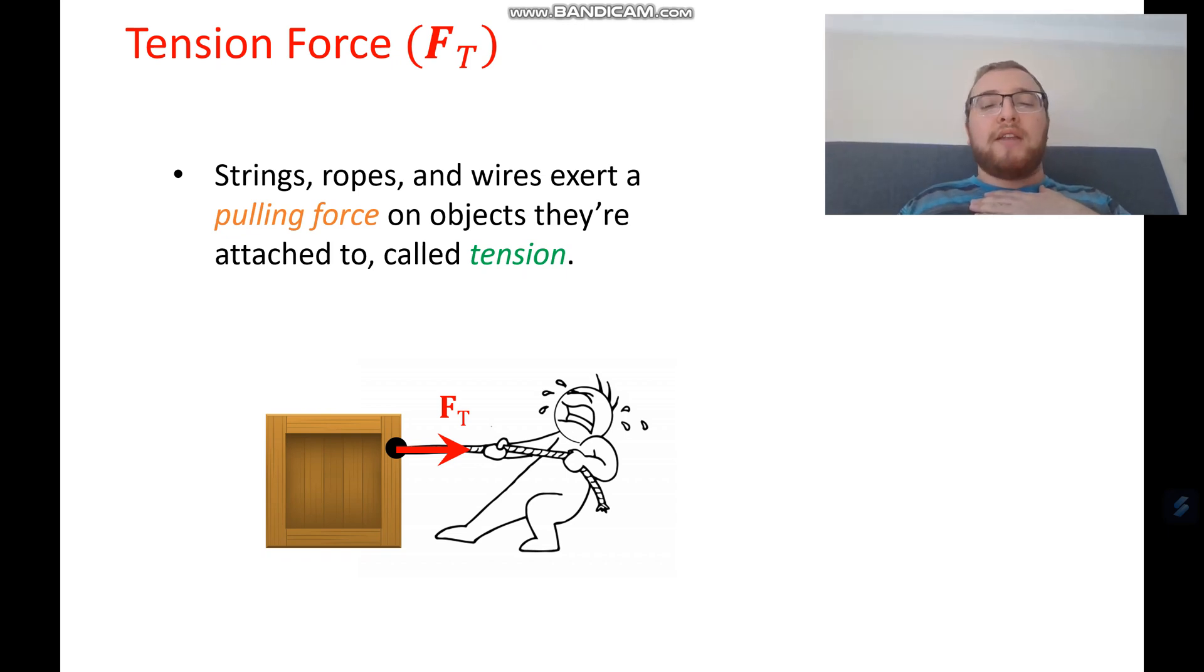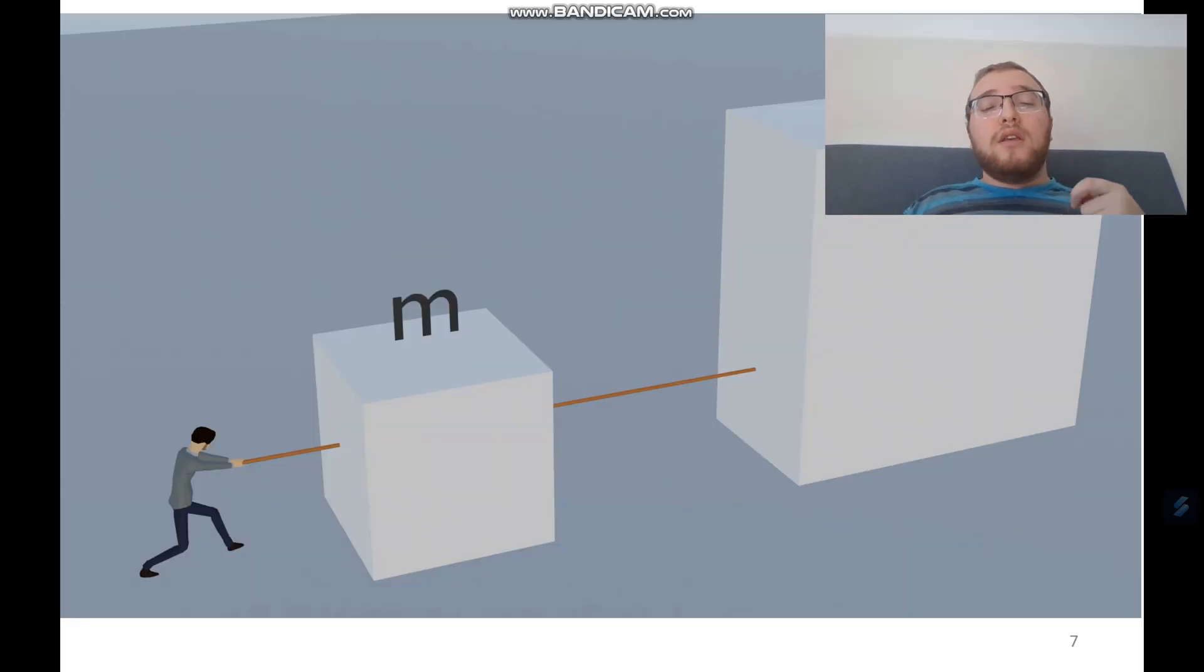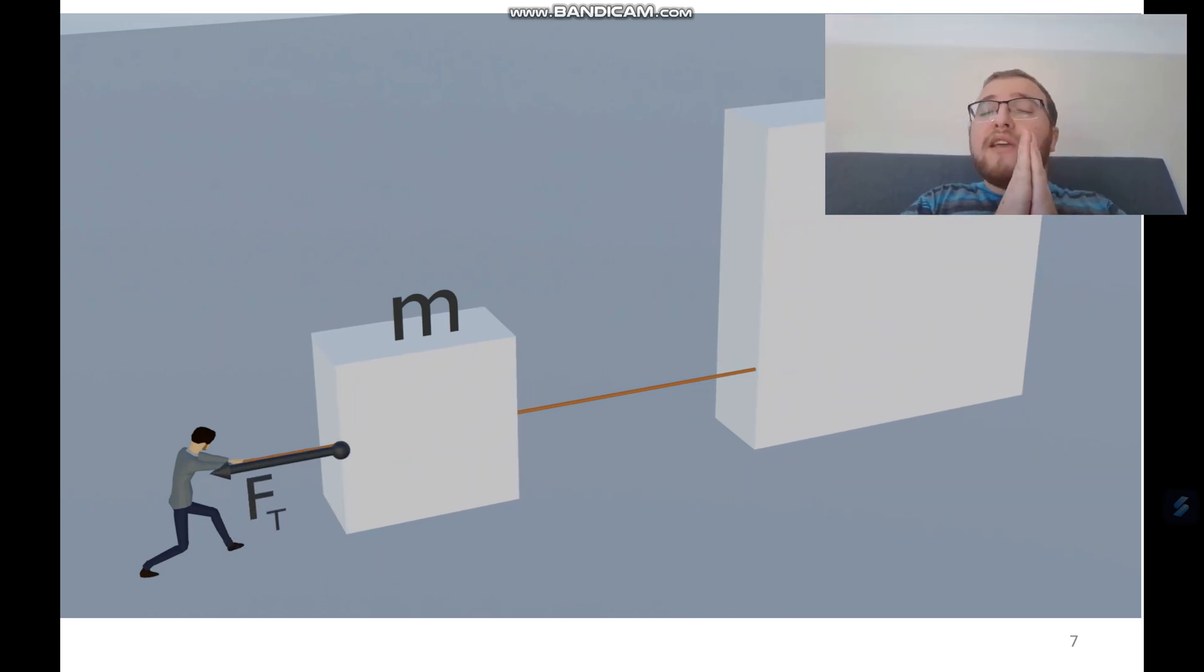We can also go and look at masses that are tied together. So just as a refresher, that'll use the tension force. And we have two boxes that are tied together, and we're actually going to treat this the same way as two boxes that are touching. Except now, we're pulling instead of pushing, and there's a tension instead of just a random contact force.